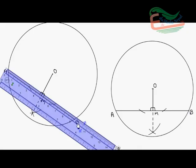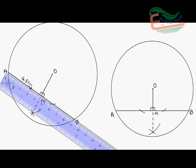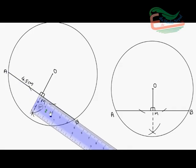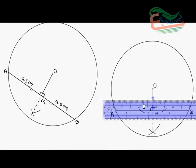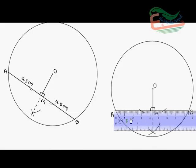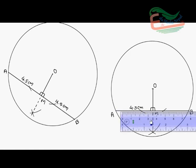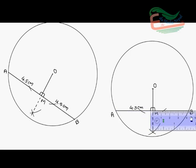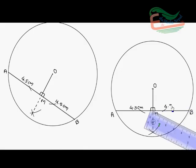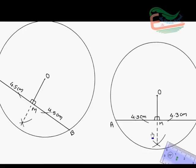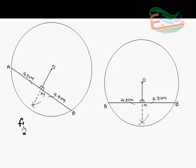Here in this figure, in this circle also, OM is perpendicular. Now we have to verify that AM equals to MB. So let's measure. AM equals to 4.5 cm. Similarly, MB equals to 4.5 cm. In this next circle also, AM equals to 4.3 cm and MB, this is also 4.3 cm. So it verifies that if we draw perpendicular from center of circle to a chord, then the perpendicular bisects the chord. This is figure 1 and this is figure 2.